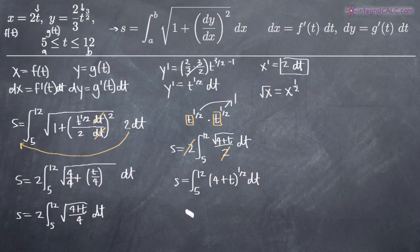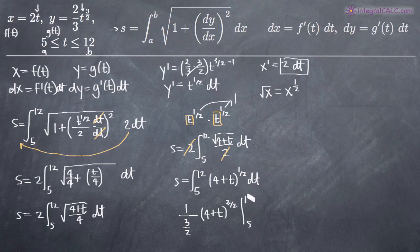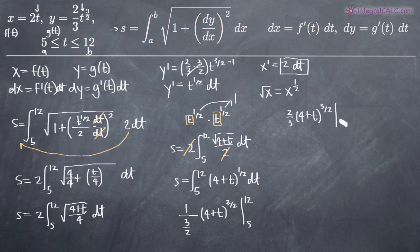Now we can easily take the integral. We add 1 to the exponent: 1/2 plus 1 is 3/2. Then we divide by 3/2, giving 1 over 3/2 times (4 plus t) to the 3/2, evaluated on the range 5 to 12. Simplifying 1 over 3/2 gives us 2/3, so we have 2/3 times (4 plus t) to the 3/2 on the range 5 to 12.